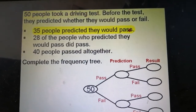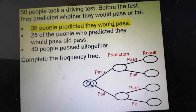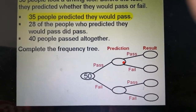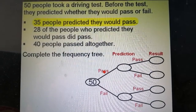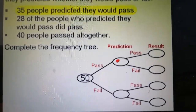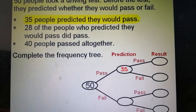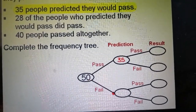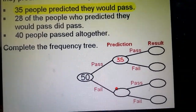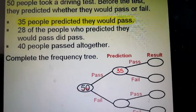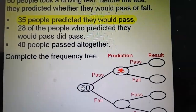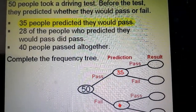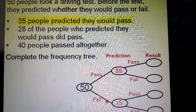This line tells me that 35 people predicted that they would pass, so this is where I'm going to put the prediction — that's 35 in there. Now when you take a driving test you can only pass or fail, so straight away I can work out that if there were 50 people and 35 predicted they would pass, then 15 must have predicted that they would fail.